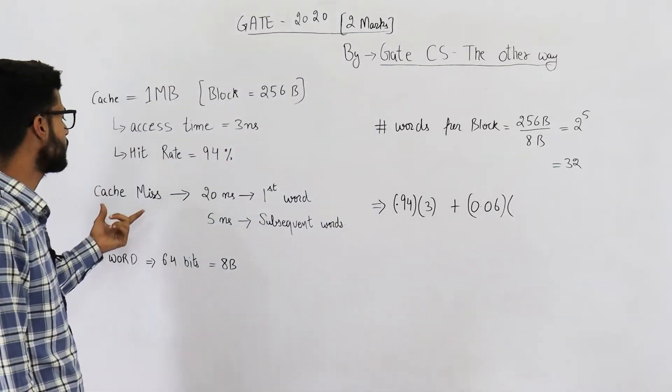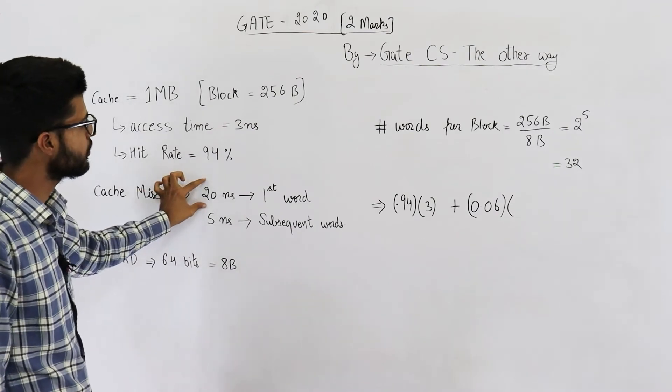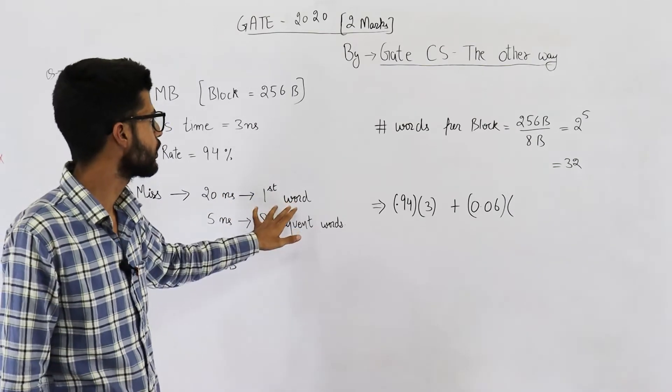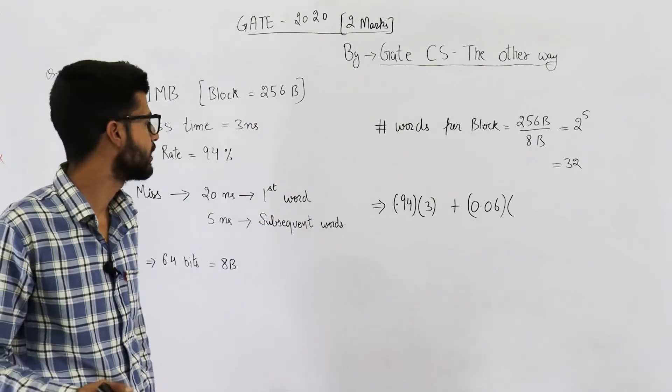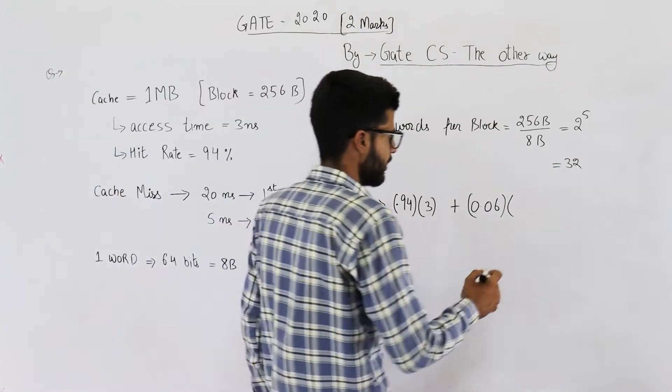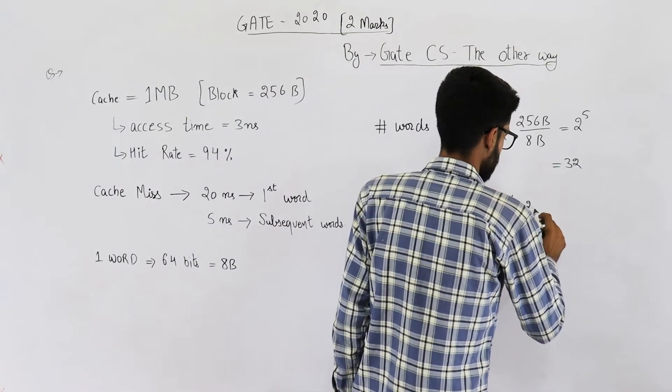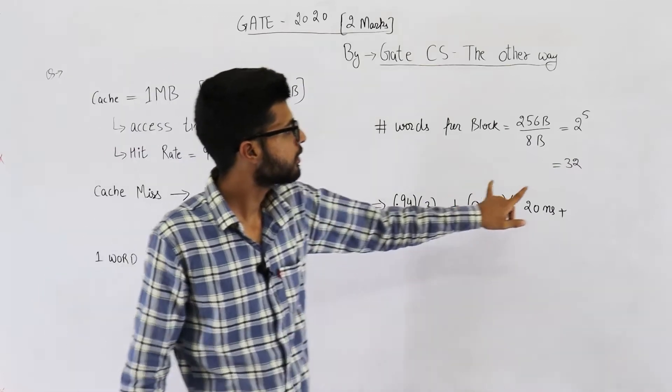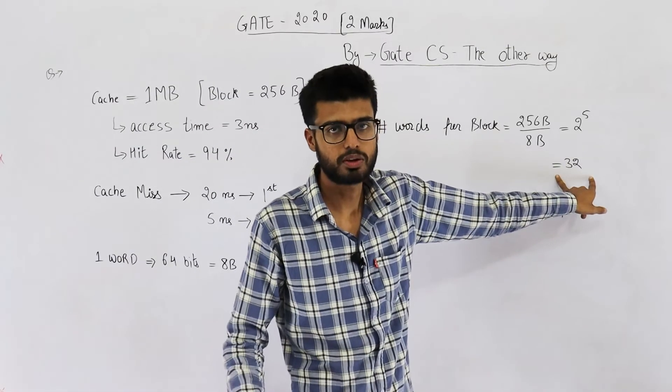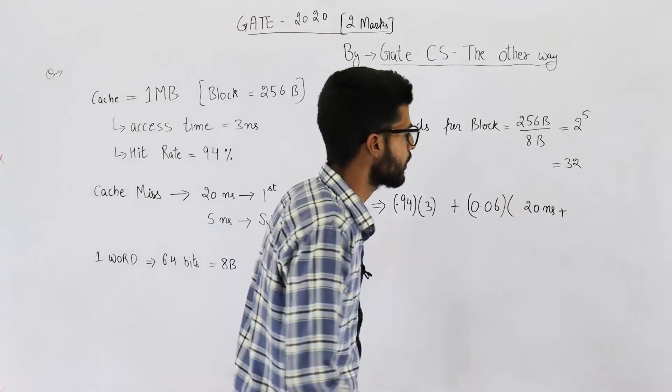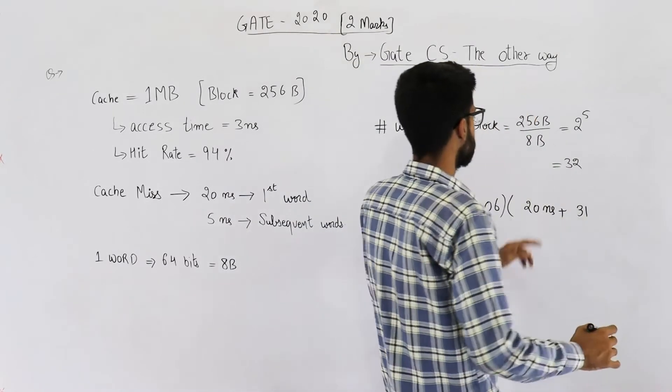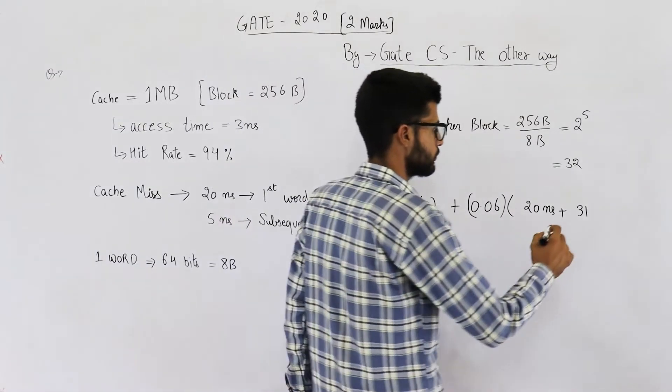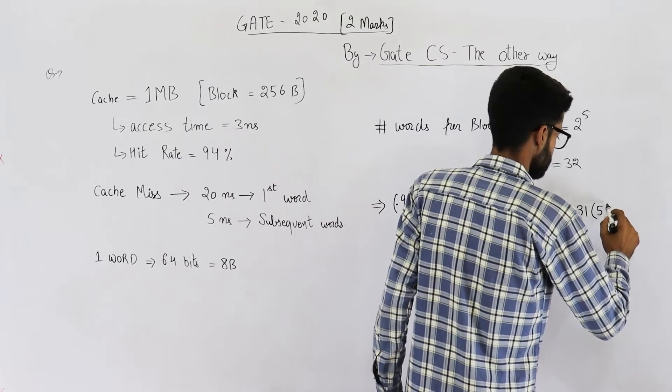In case of miss, 20 nanoseconds are required for fetching the first word. The first word of the block requires 20 nanoseconds. There are 32 words in total per block, so remaining 31 words require 5 nanoseconds each. That's it.